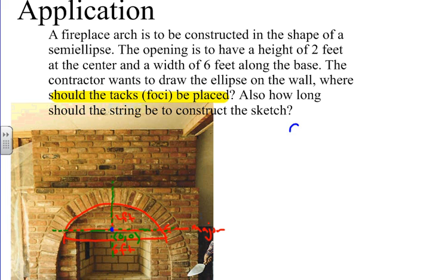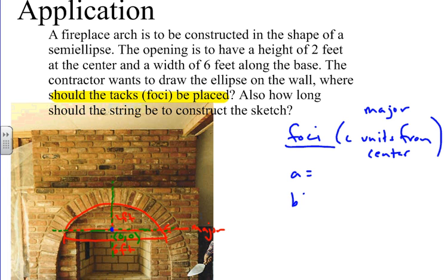Foci are C units from center on the major axis. So with this information, we can identify this by finding C. Well, I guess we need to know what A is and what B is, because we're going to use the formula C squared equals A squared minus B squared.